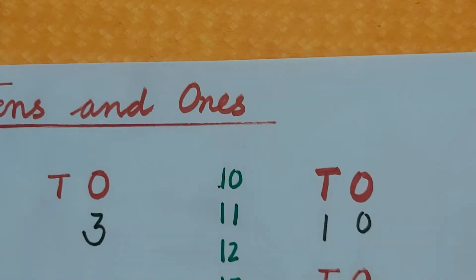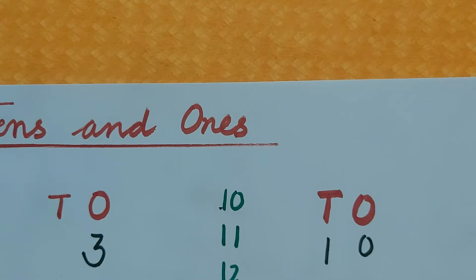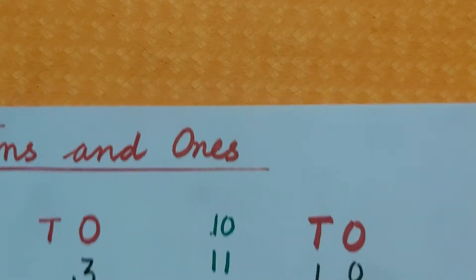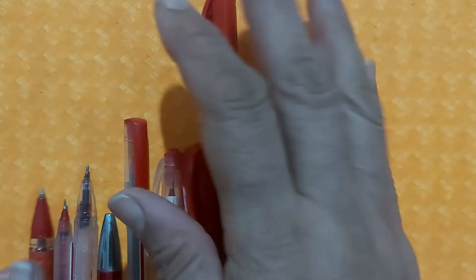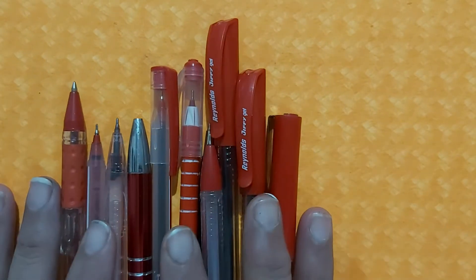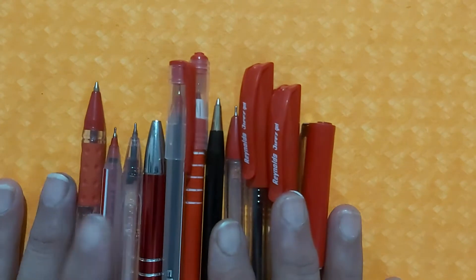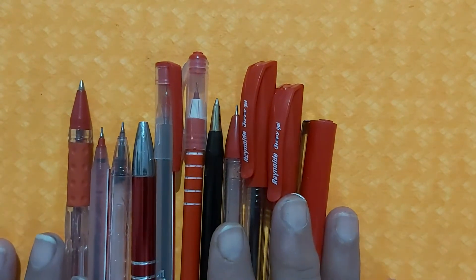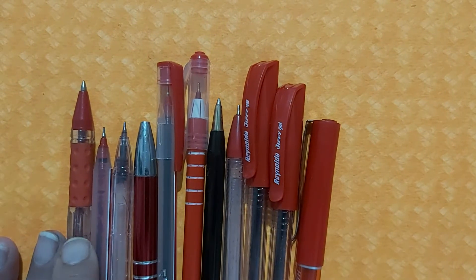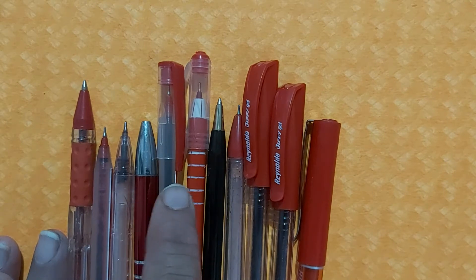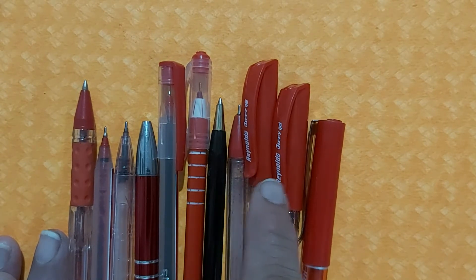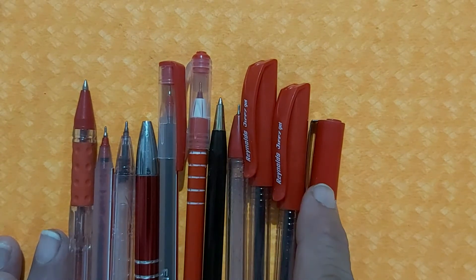Now let's learn with the help of objects. See children, here are few red pens. Let's count how many pens are here: 1, 2, 3, 4, 5, 6, 7, 8, 9, 10, 11.